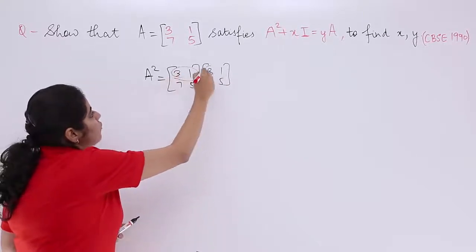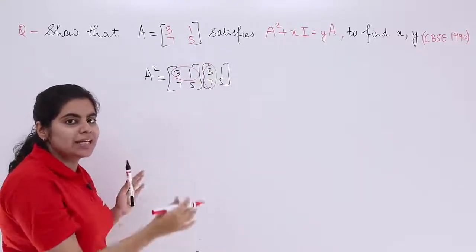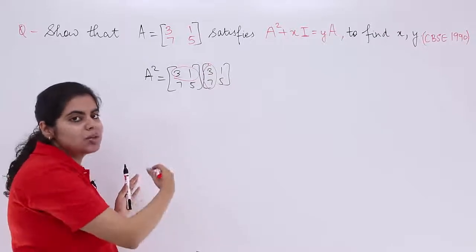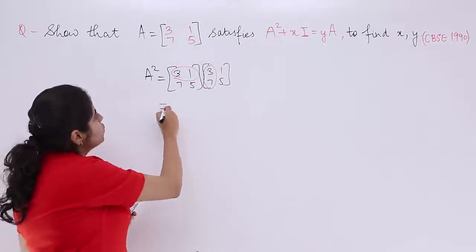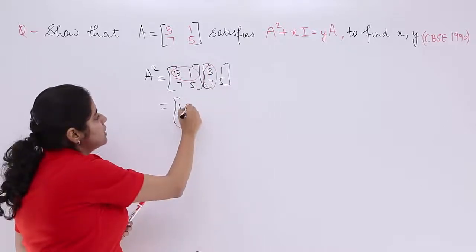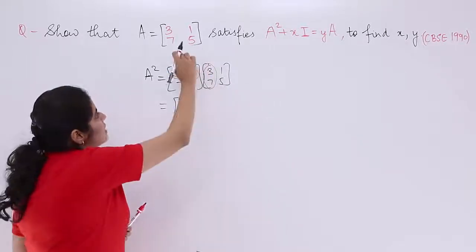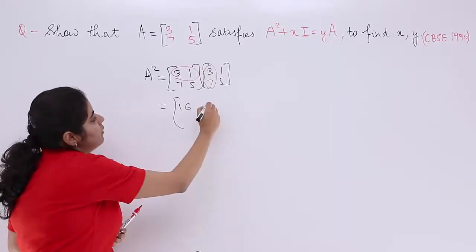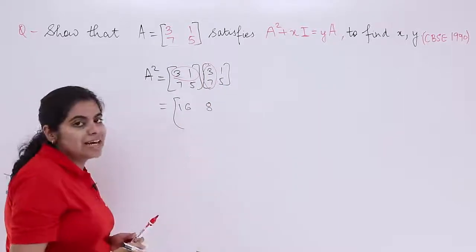So it is first row, first column, first row, second column, second row, first column, second row, second column. So it is 3 times 3 is 9, 7 times 1 is 7, 9 plus 7 is 16. Next, first row, second column, 3 times 1 is 3, 5 times 1 is 5, 3 plus 5 is 8.